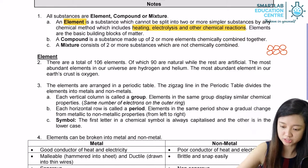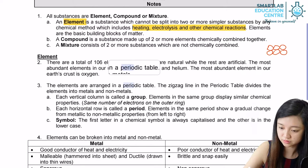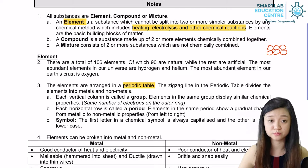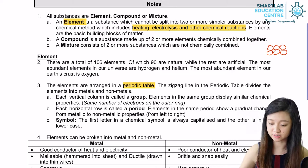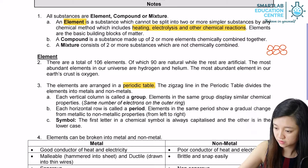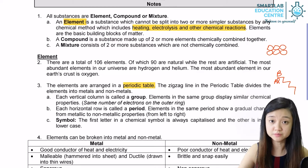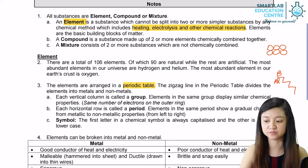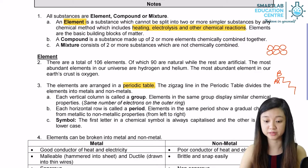The elements are also all arranged in a periodic table. The imaginary zigzag line, which starts from between boron and aluminium in the third column, actually divides the elements into metals and non-metals. The zigzag line starts from the third column in the middle of boron and aluminium. The left side of the zigzag line will be all metals, while the right side will be all non-metals.